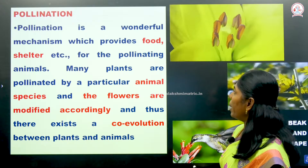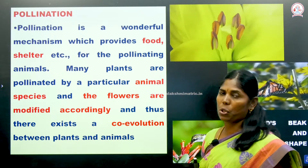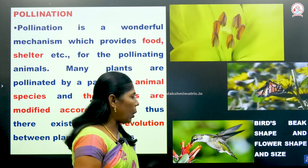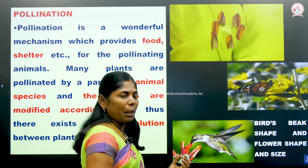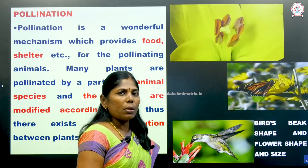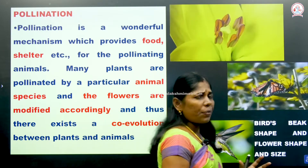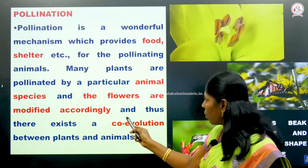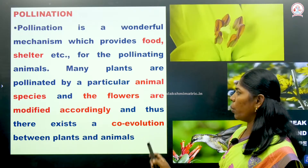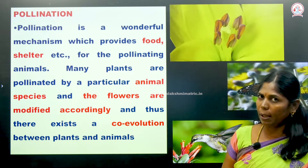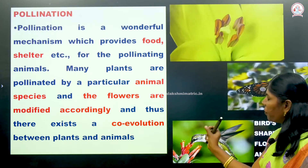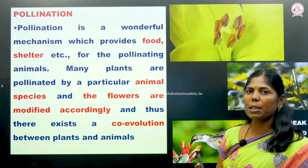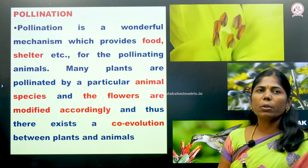Many plants are pollinated by a particular animal species. For example, birds are useful for pollinating particular species. The flowers are modified accordingly and there exists a co-evolution between plants and animals. Both the beak and the flower exhibit co-evolution.